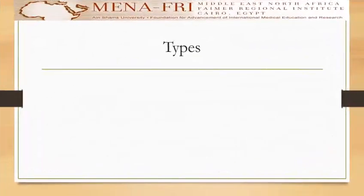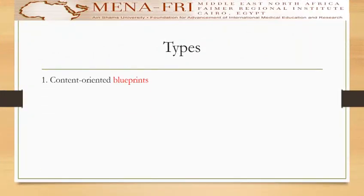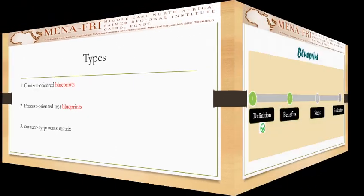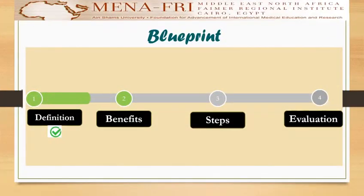There are three types of blueprinting: content-oriented blueprints, process-oriented test blueprints, or a content-by-process matrix. For our next step, this will be the benefits from the blueprint.